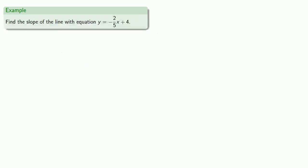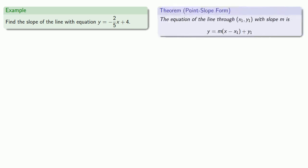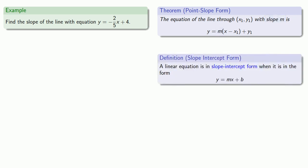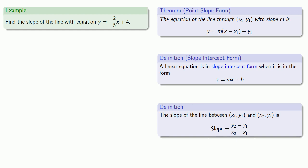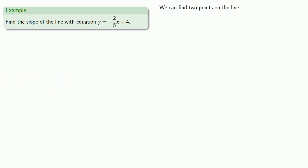What if I want to find the slope of a line? If I have the equation in point-slope form, I can read off the slope immediately. But if the line is in slope-intercept form, we need to remember the definition of slope. We can calculate the slope of a line between any two points, which means if we want to calculate the slope of this line, we need to find two points on the line.